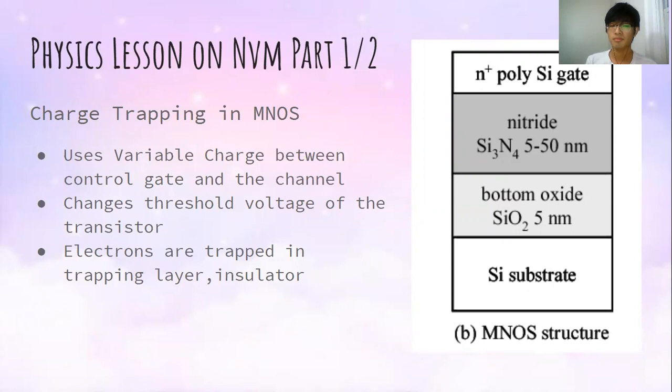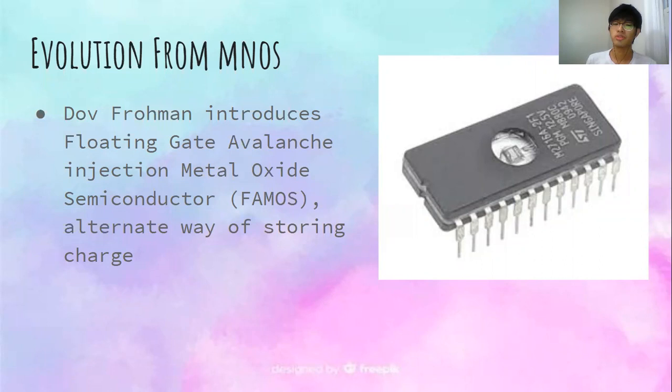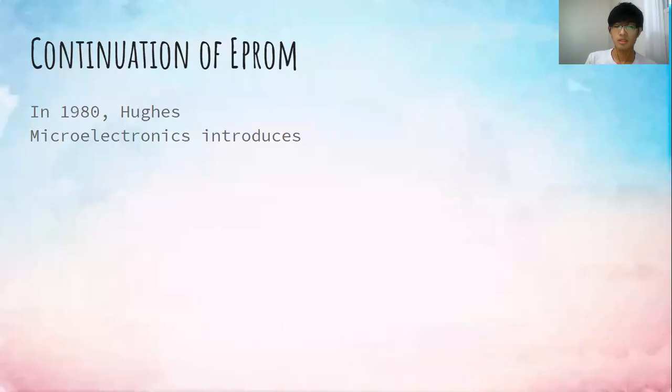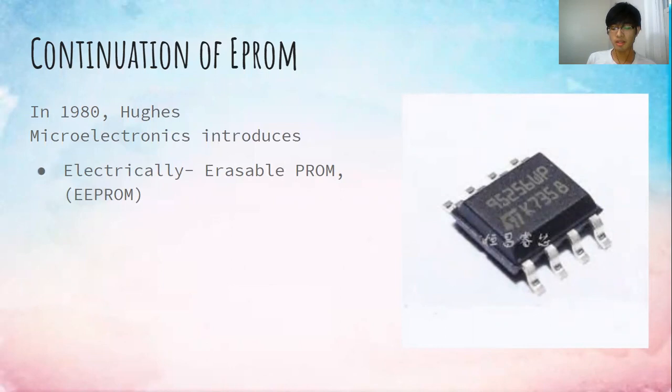An evolution from MNOS comes from Dave Froman, who introduced the floating gate avalanche injection metal oxide semiconductor, FAMOS, which is just another alternate way of storing charge. That became the basis of erasable programmable read-only memory, EPROM. In 1980, Hughes Microelectronics introduced the electrically erasable PROM, EEPROM.